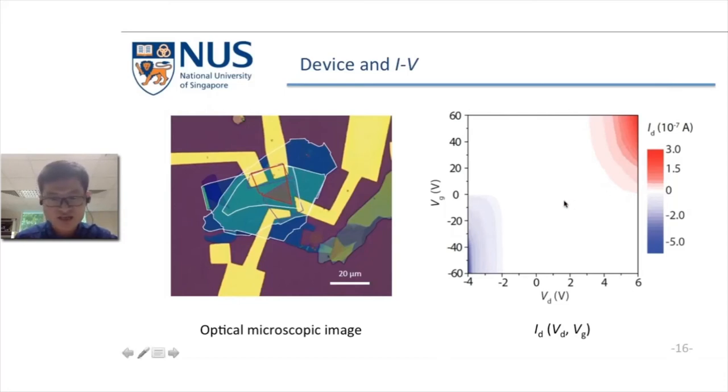First, we check the IV characteristics of the device. We found that in most cases, the device is in a high resistance condition. But in the positive gate and positive bias condition, or in negative gate and negative bias condition, there is current. This is understandable, similar to the WS2 device, but the only difference is we have another conductive branch in the negative gate and negative bias.